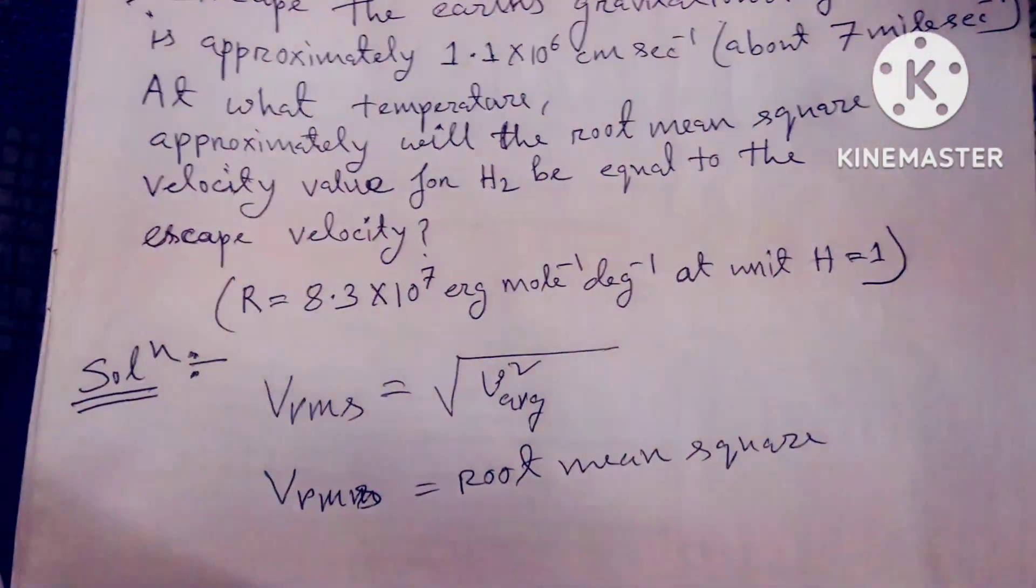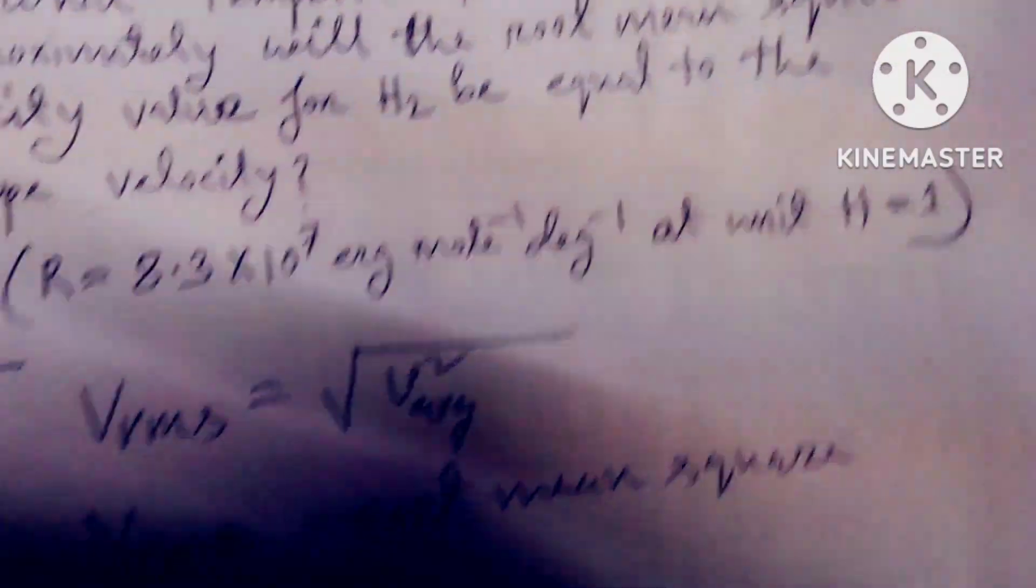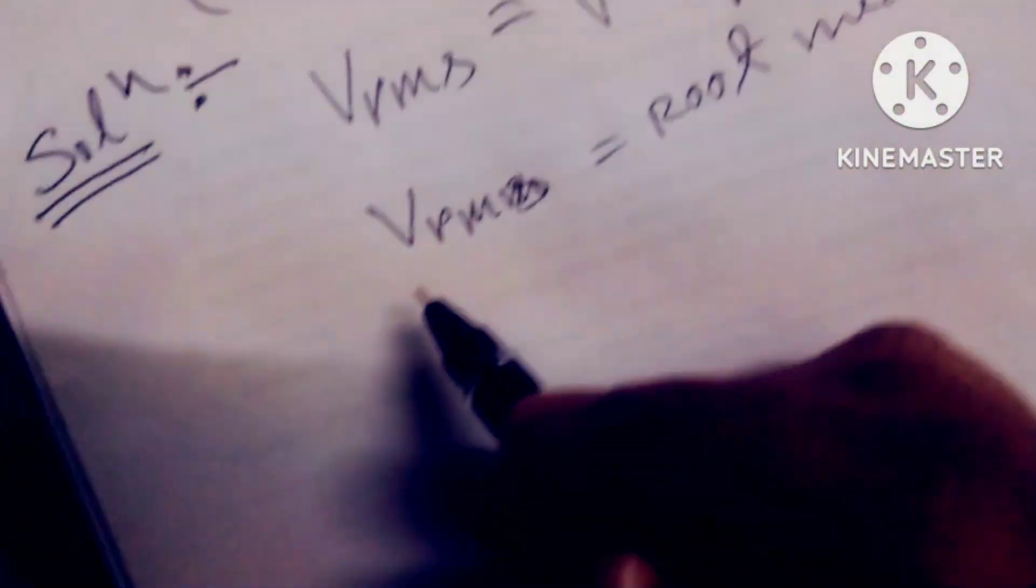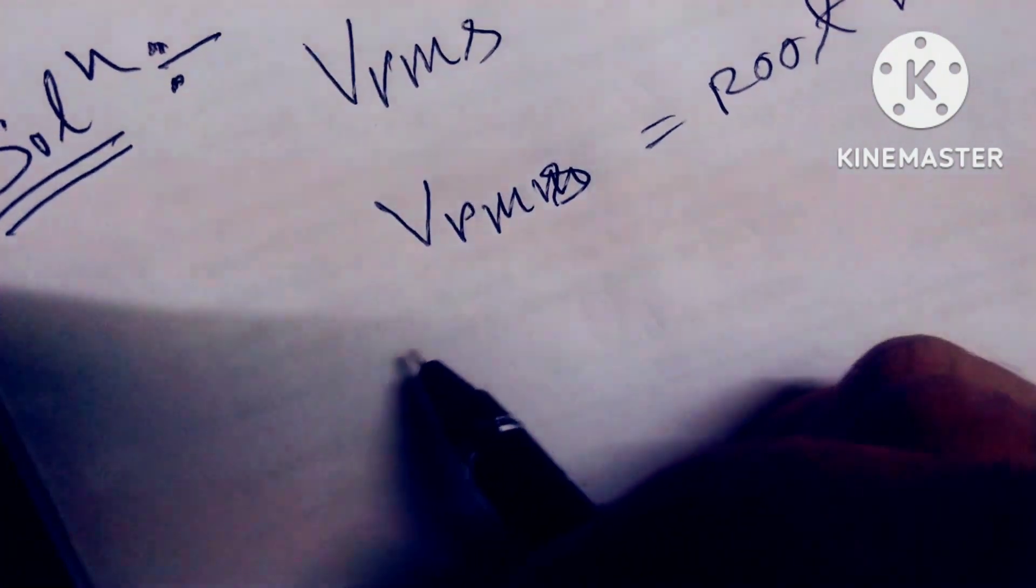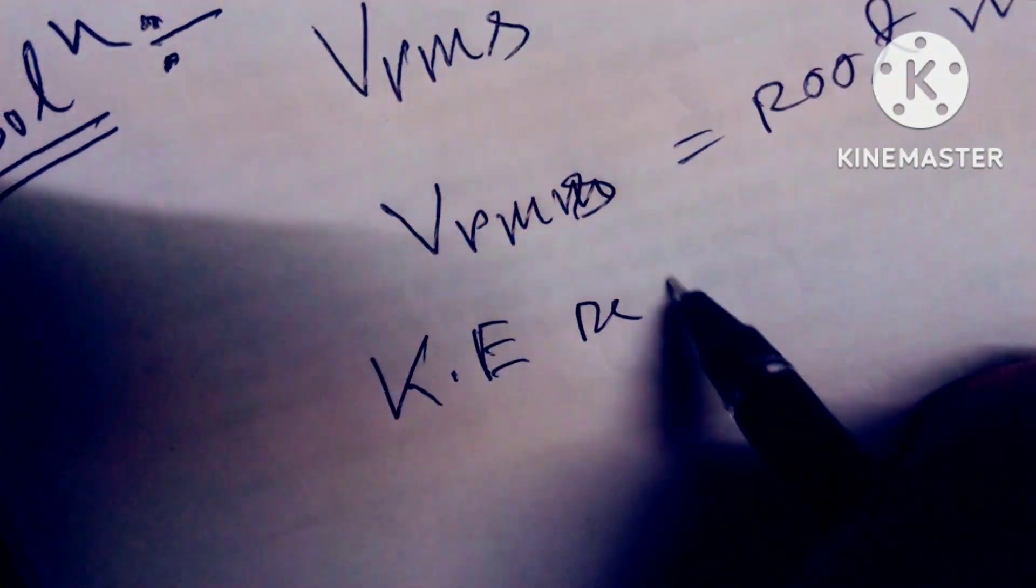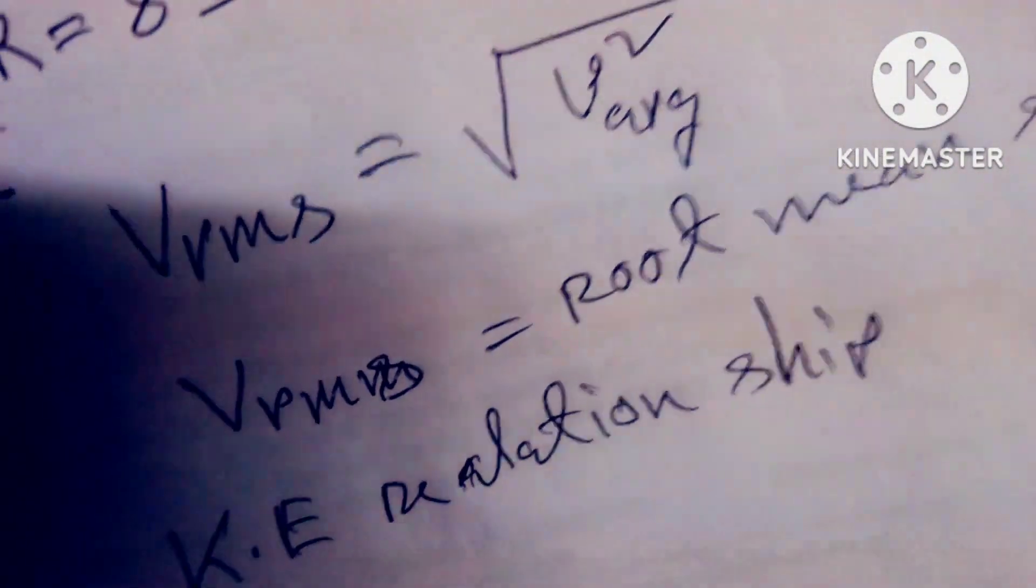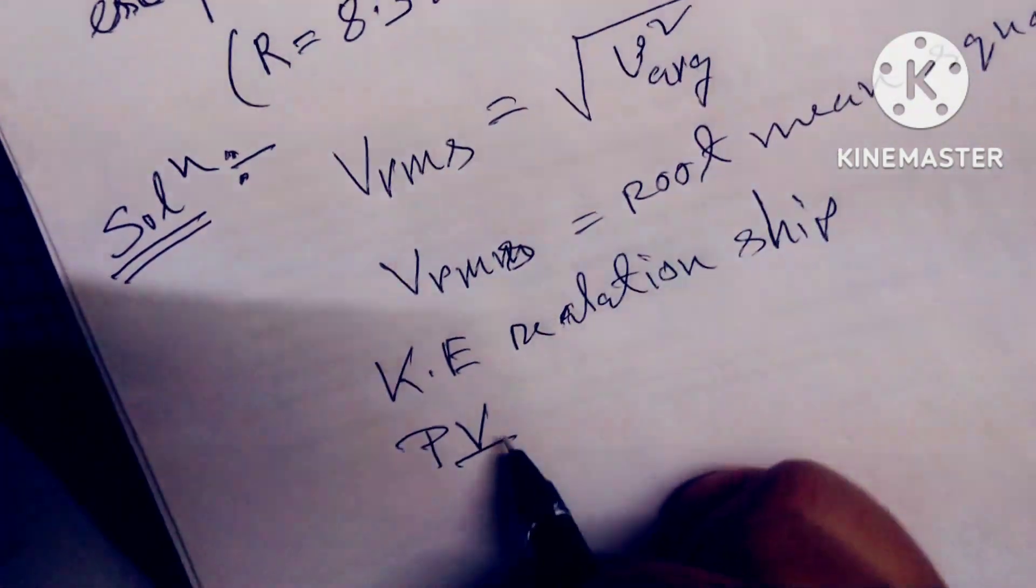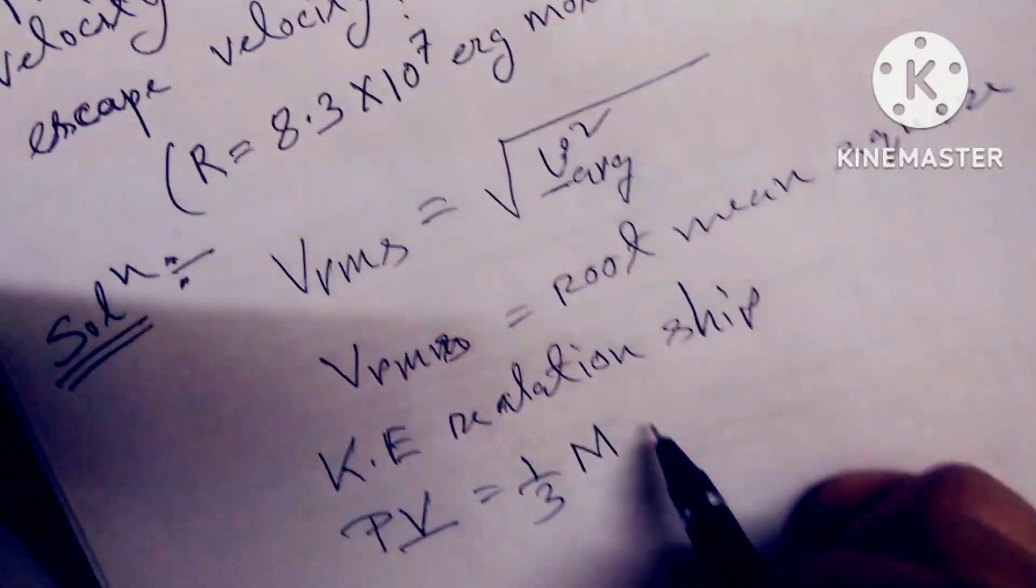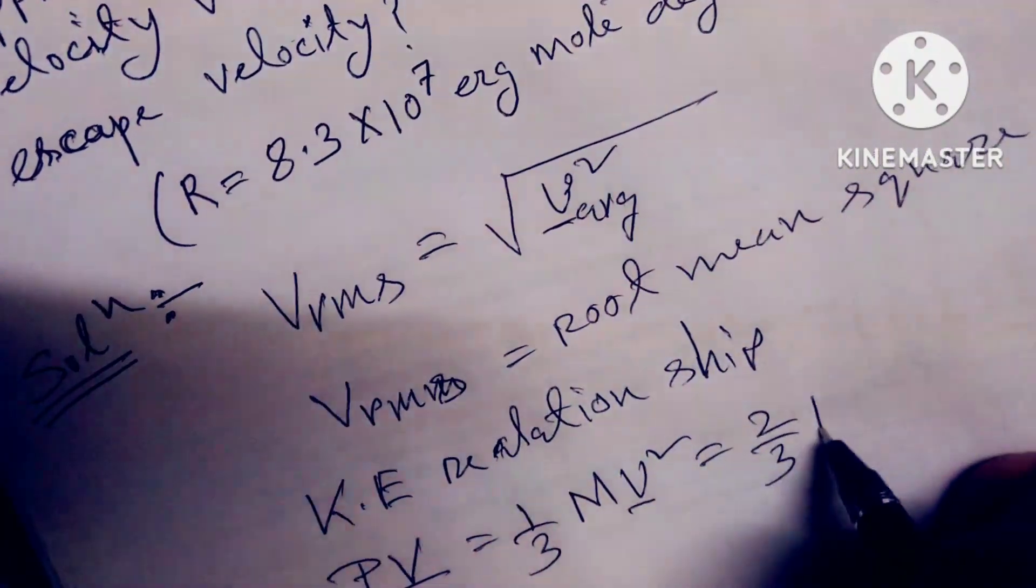Root mean square is equal to the root of velocity squared average. This is a chemistry problem but very interesting. That's why I'll take the kinetic energy relationship. The relation is PV̄ equals...